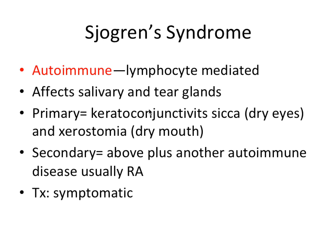Primary Sjögren's syndrome involves keratoconjunctivitis sicca — dry eyes — and xerostomia, which is dry mouth. Secondary Sjögren's involves both dry eyes and dry mouth plus another autoimmune disease, usually rheumatoid arthritis. Rheumatoid arthritis is another autoimmune condition that often occurs in tandem with Sjögren's, and RA can also involve the TMJ, giving it oral and facial components. Treatment is symptomatic, and any patient with Sjögren's syndrome is going to have a high caries risk due to xerostomia.